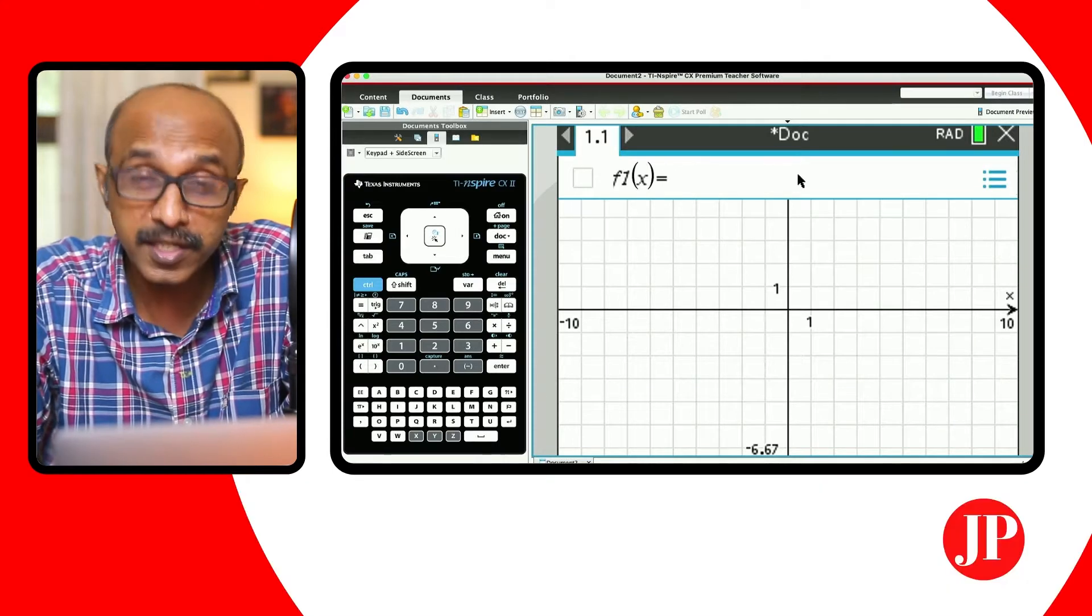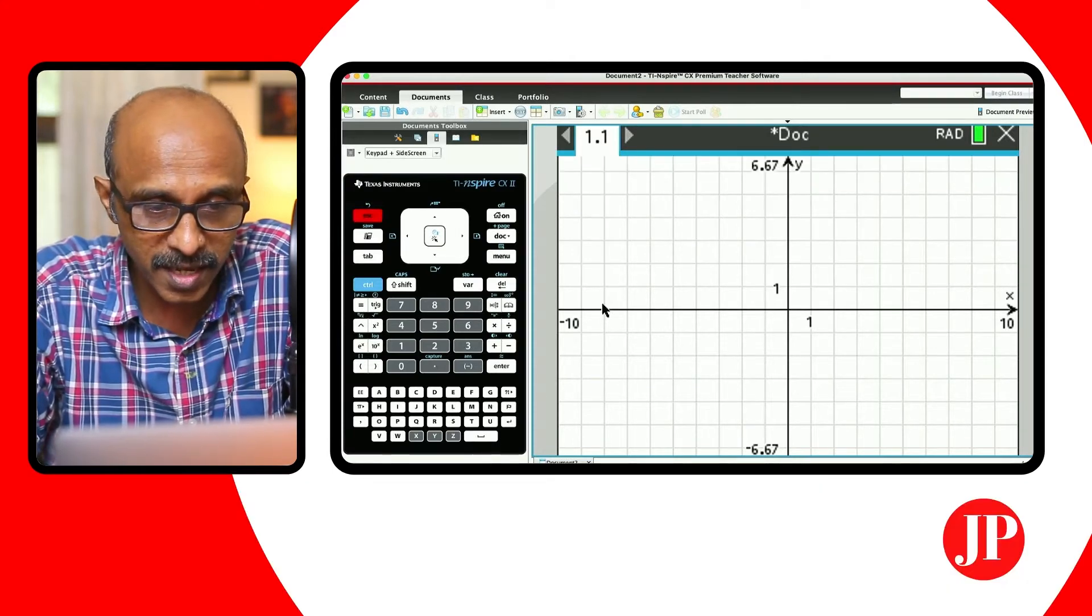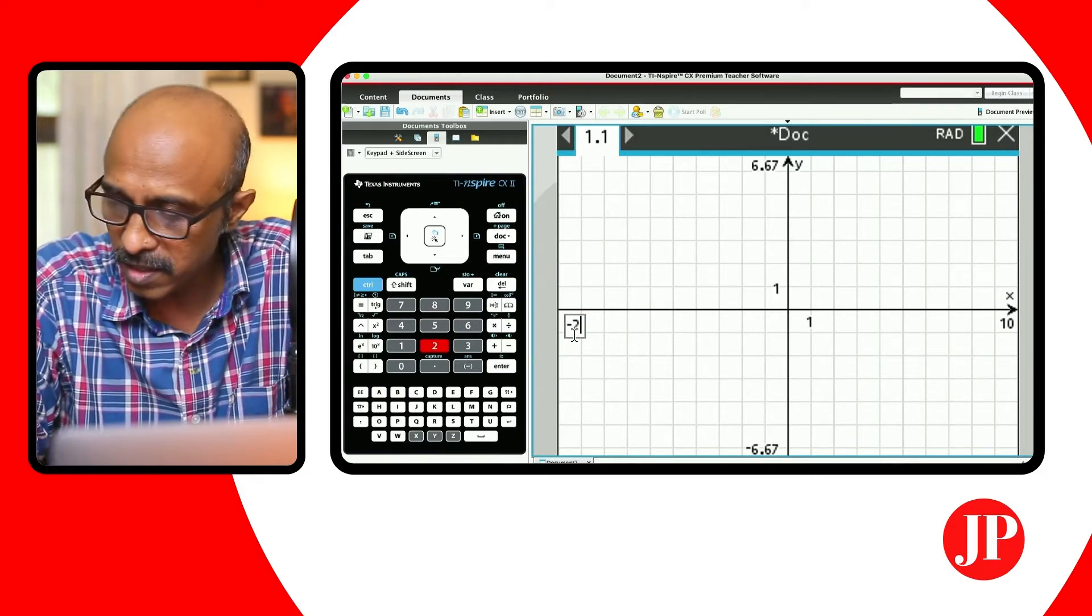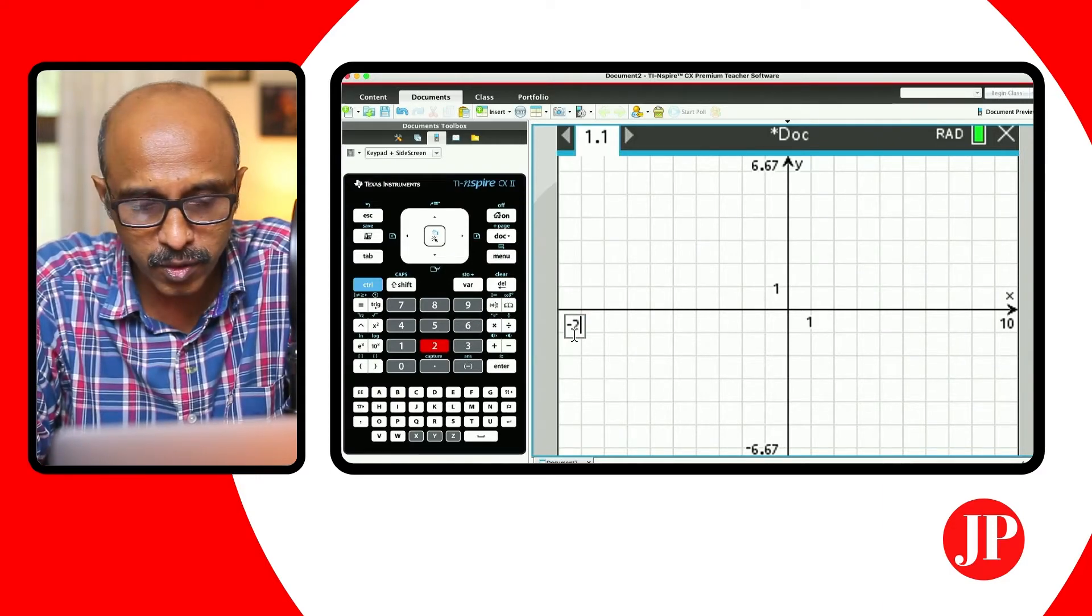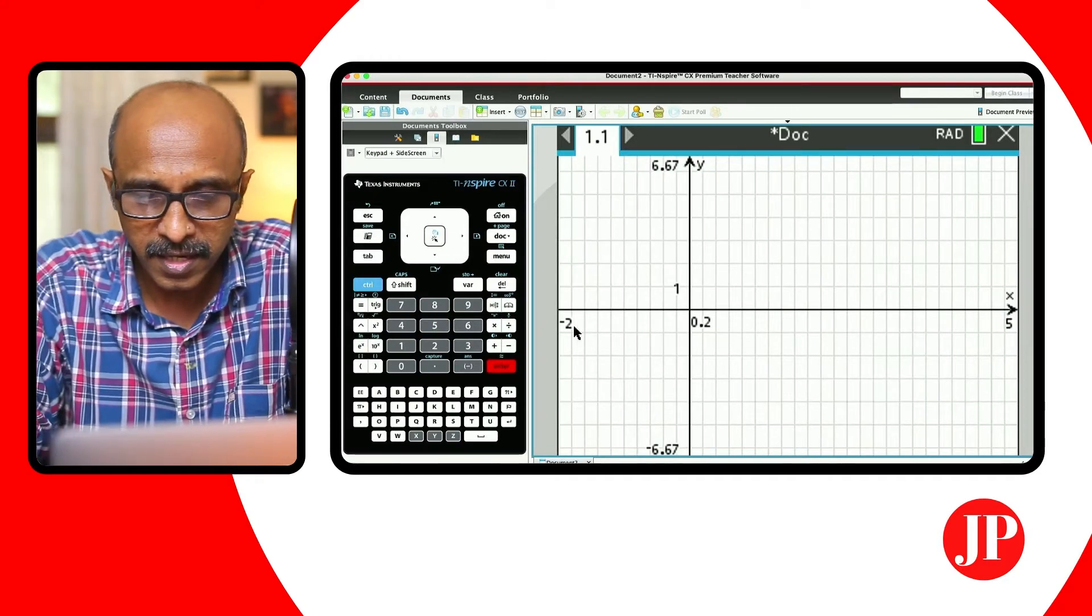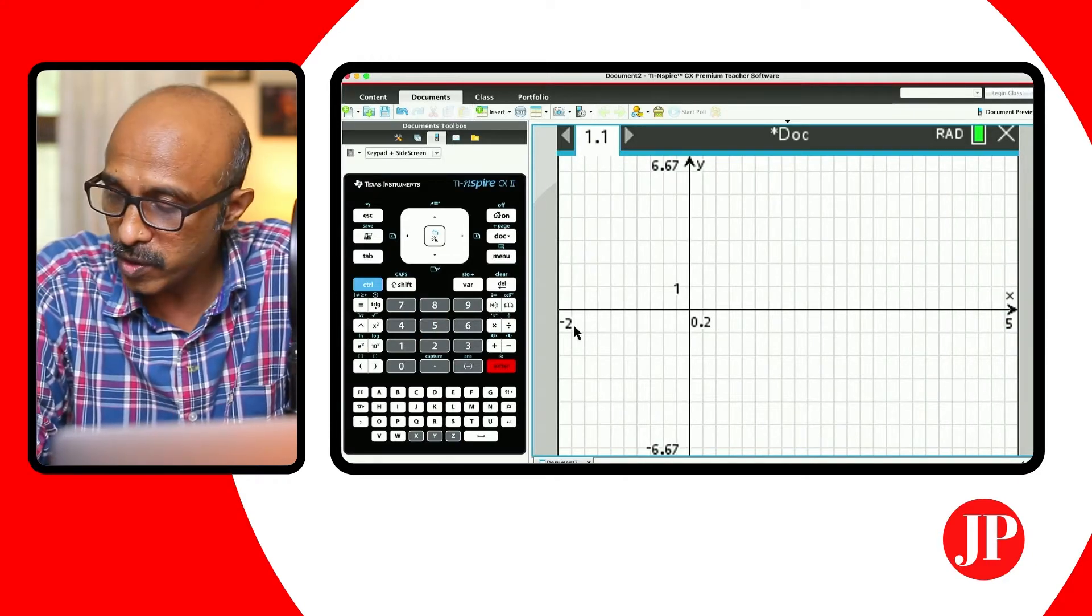And the first thing I always recommend is just hit escape and adjust the window settings as per the question. So in this case, we wanted the x values between negative 2 and 5. Hit enter. Now we are clear. Now you've got the window settings right.